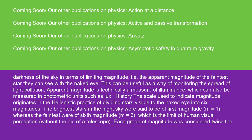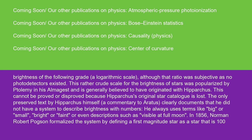History of the scale used to indicate magnitude originates in the Hellenistic practice of dividing stars visible to the naked eye into six magnitudes. The brightest stars in the night sky were said to be of first magnitude (m=1), whereas the faintest were of sixth magnitude (m=6), which is the limit of human visual perception without the aid of a telescope. Each grade of magnitude was considered twice the brightness of the following grade (a logarithmic scale), although that ratio was subjective as no photodetectors existed. This rather crude scale for the brightness of stars was popularized by Ptolemy in his Almagest and is generally believed to have originated with Hipparchus. This cannot be proved or disproved because Hipparchus' original star catalog is lost. The only preserved text by Hipparchus himself, a commentary to Aratus, clearly documents that he did not have a system to describe brightness with numbers. He always uses terms like big or small, bright or faint, or even descriptions such as visible at full moon.